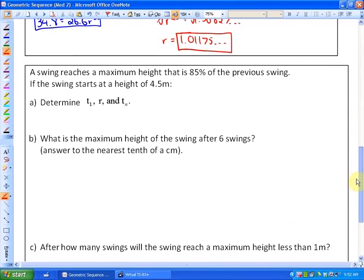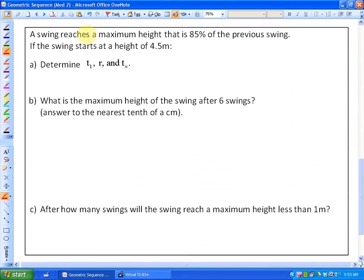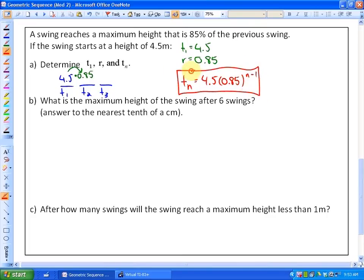Let's look at one more problem. This next problem is talking about a swing. It says a swing reaches a maximum height that is 85% of the previous swing. If the swing starts at a height of 4.5 meters, answer the following questions. First, determine term 1. Well, term 1 in this list would be 4.5 meters. The common ratio in this particular case is 0.85 because 85%. And finally, determine what Tn is. The general term would be 4.5 times 0.85 to the power of n minus 1.